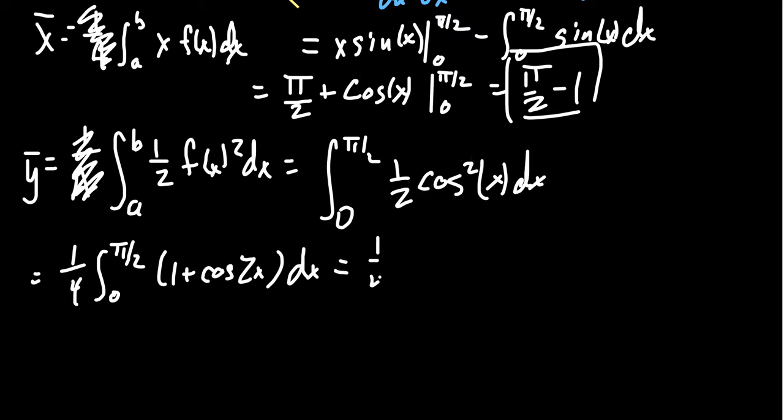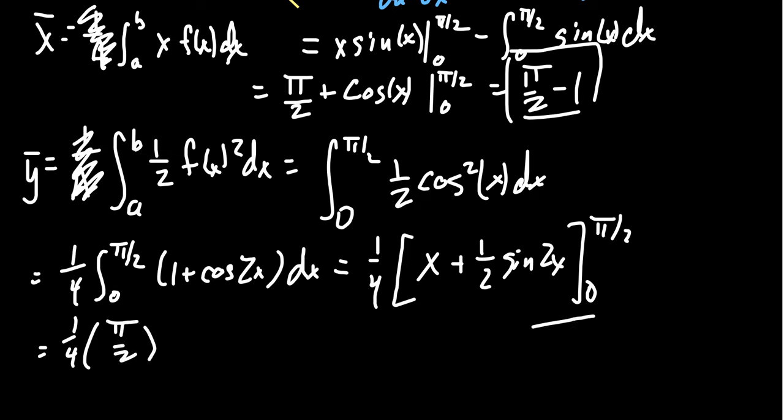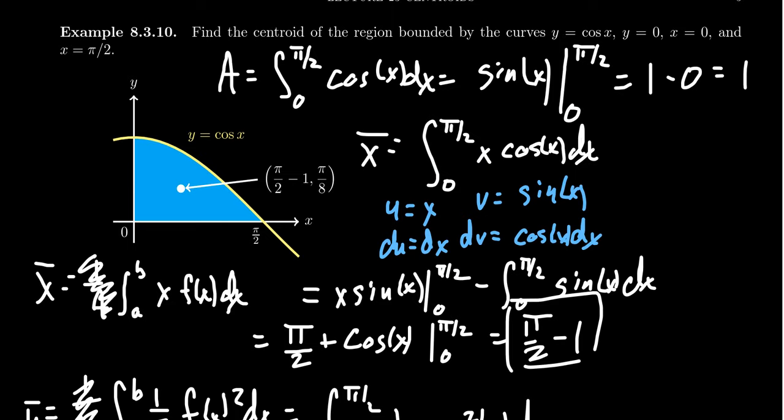Taking the antiderivative, we have 1 fourth in front. 1 is going to raise to become x, and cosine will raise to become 1 half sine of 2x, as we go from 0 to pi halves. When we plug in pi halves into x, you'll get pi halves. When you plug it into sine, you're going to get 2 pi over 2, which is sine of pi. Sine of pi is 0, so it vanishes. We get 1 fourth times pi halves. When you plug in 0, it disappears, and sine of 0 is 0. The y-coordinate of the centroid is going to be pi eighths, which if we come back up to our picture, which is drawn to scale, we see that does look like the center of gravity there.